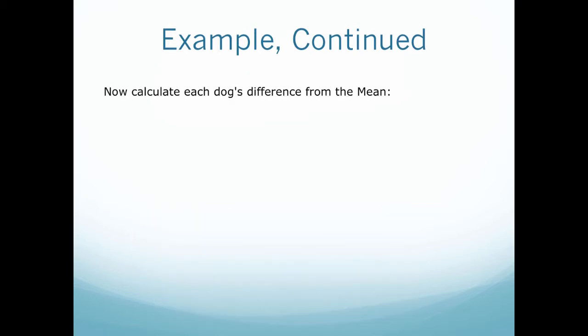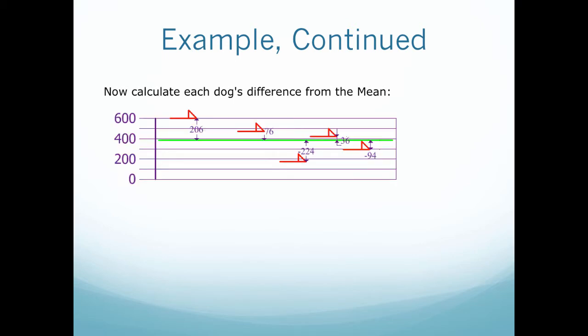Now we want to calculate each dog's difference from the mean, or how far away is each dog from the mean. So we would then subtract off the height from our specific height to the mean. So you can see here I have labeled each difference in height.